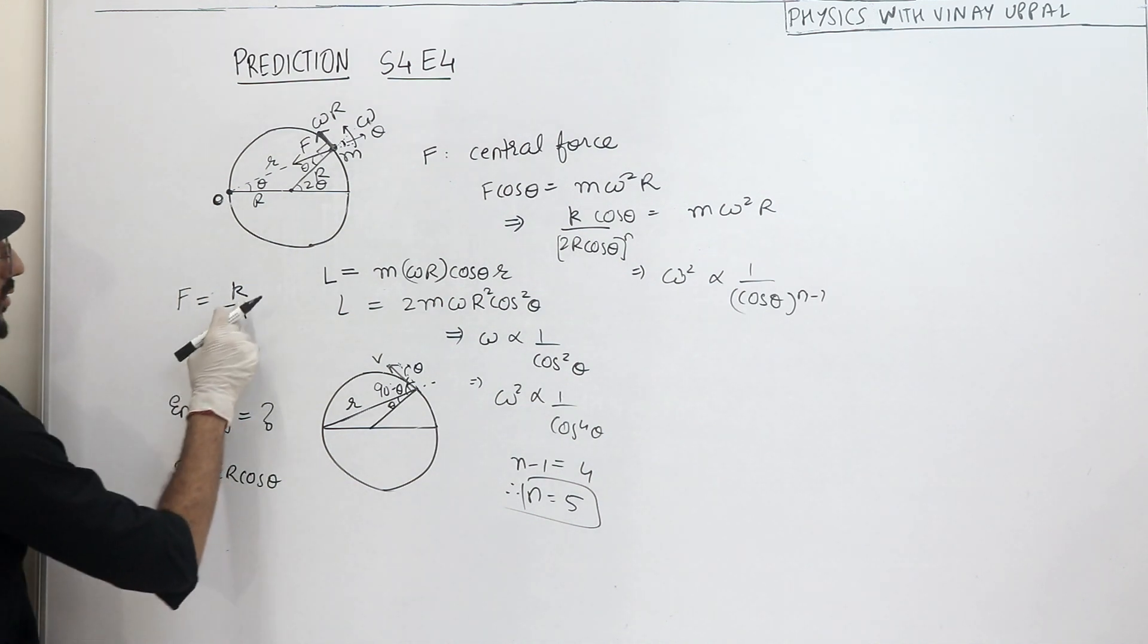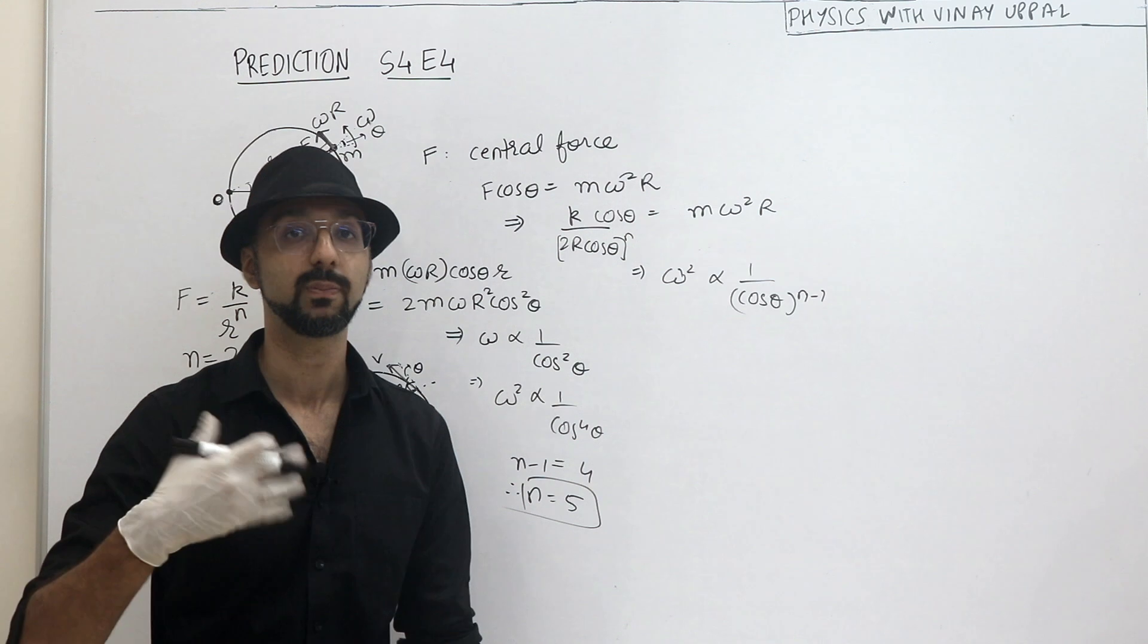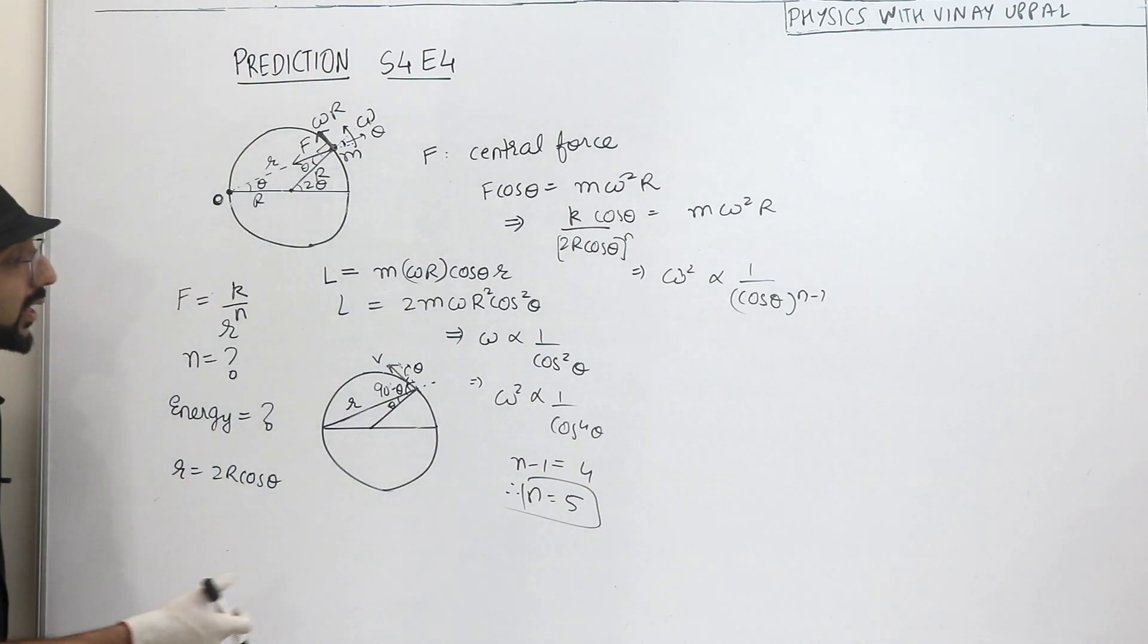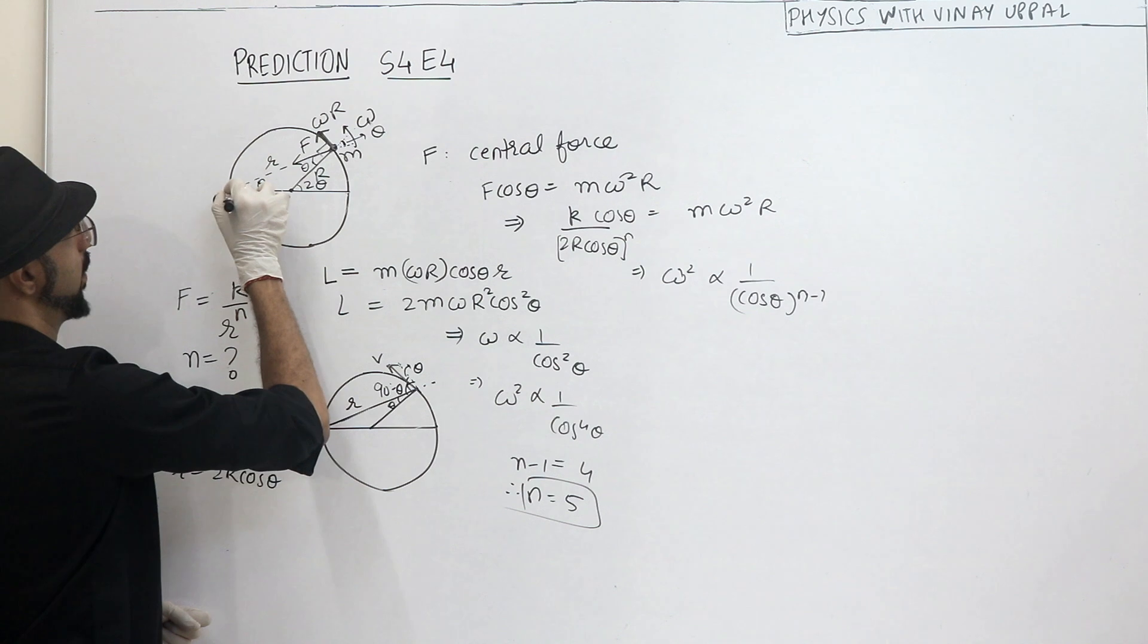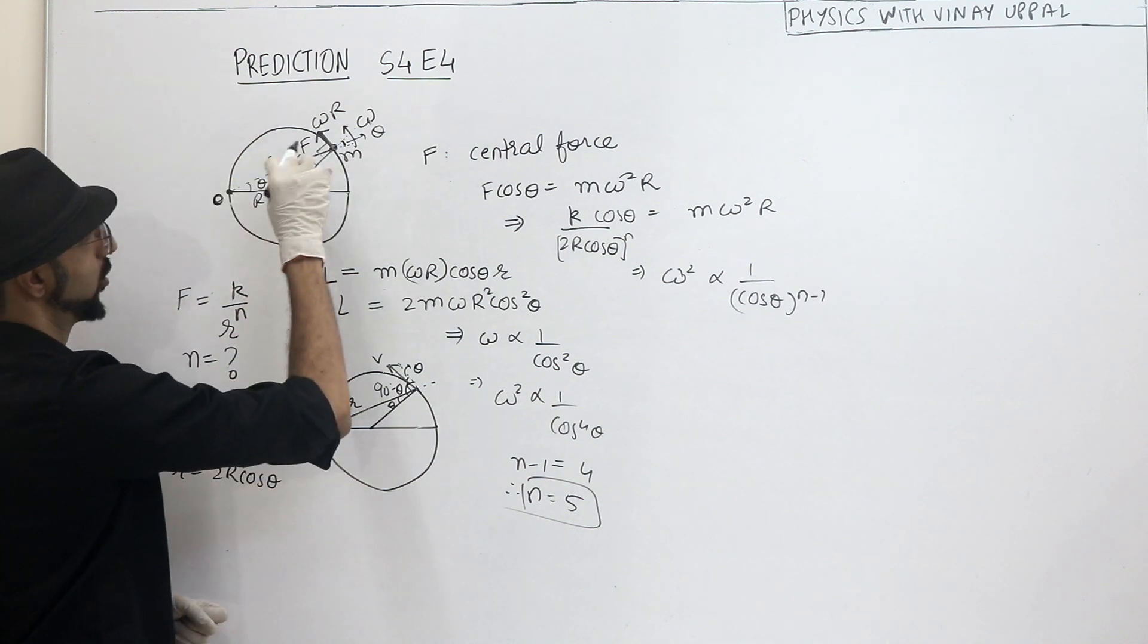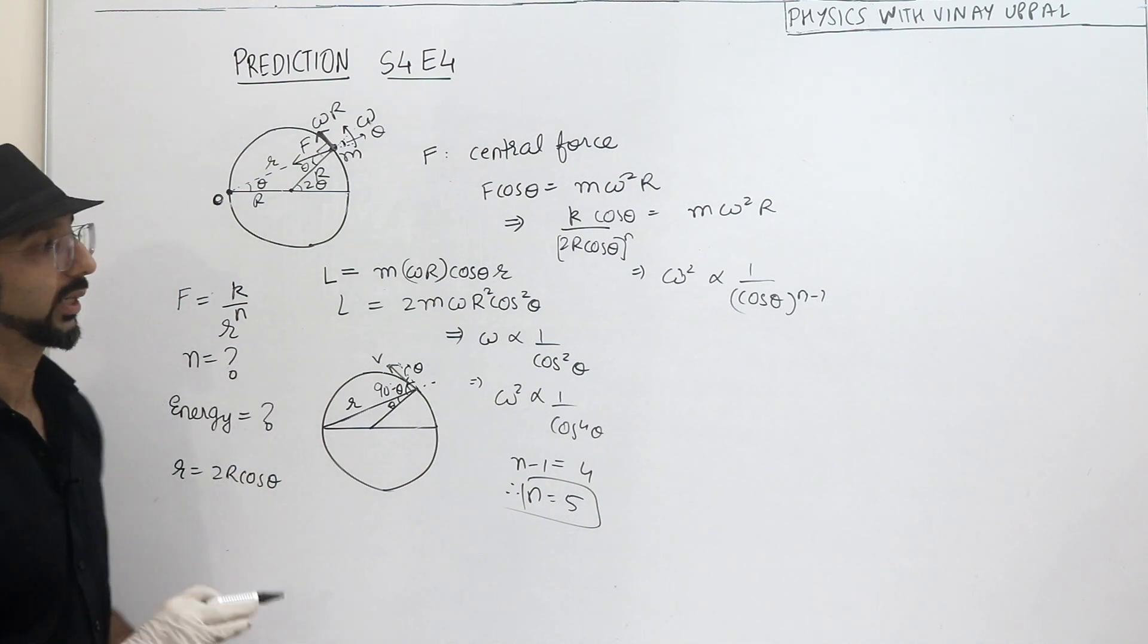And that's your answer. So when f is proportional to the inverse, or it is inversely proportional to the fifth power of r, then you will get a possibility where the particle is performing circular motion such that the point towards which the force is always acting is on the circle itself.